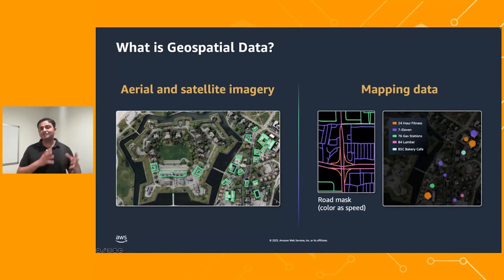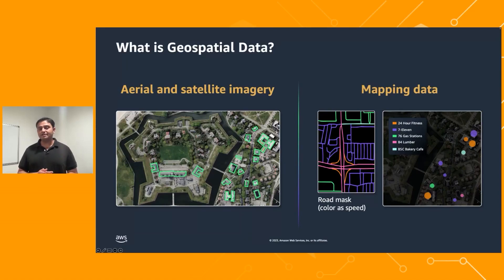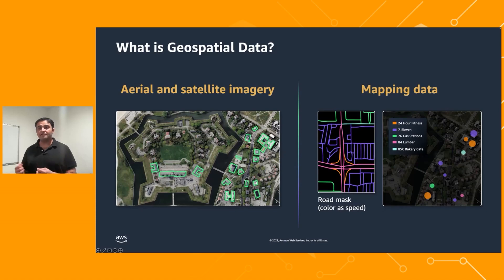Geospatial data consists of satellite and aerial imagery and map data. Satellite and aerial imagery consists of visual and non-visual information. Visual information is very similar to the red, green, blue images captured from your iPhone, except these images are captured from satellite and aerial vehicles and capture information of Earth's surface. Non-visual information includes thermal emissions or infrared radiations. Customers today are using hundreds of terabytes of satellite and aerial imagery to extract meaningful information, stored as map data.